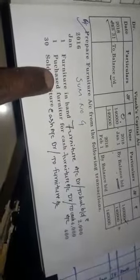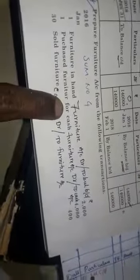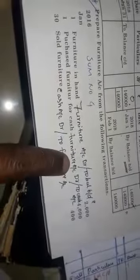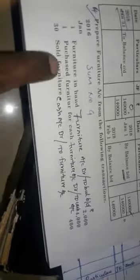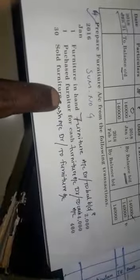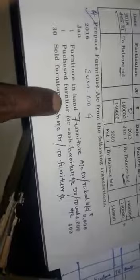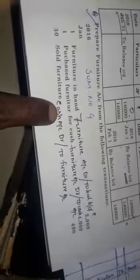Goods purchased — purchase account debtor to cash account. Cash will come to debit.